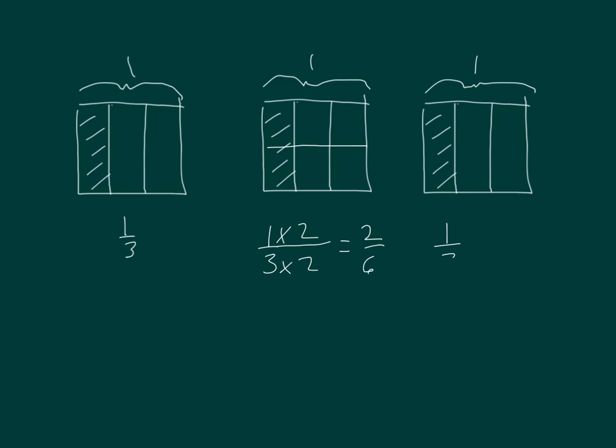For our other one, let's go ahead and show and model where we get 3 times the amount of parts by drawing 2 lines, and then we get 3 ninths. So 1 third is equal to 2 sixths, and it's also equal to 3 ninths.